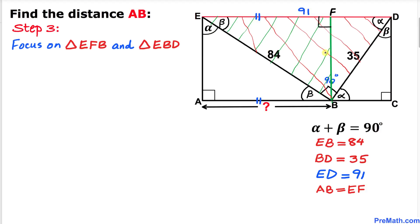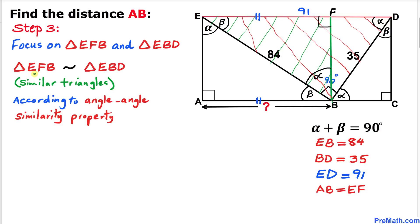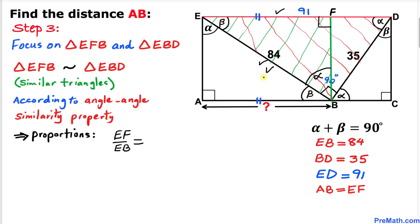Let's focus on two right triangles: EFB and EBD. In triangle EFB, this angle is 90 degrees, this angle is beta, so the remaining angle has to be alpha. Therefore triangles EFB and EBD are similar triangles by the angle-angle similarity property. So we set up a proportion: EF divided by EB equals EB divided by ED.